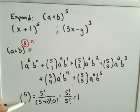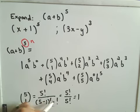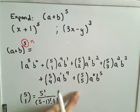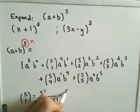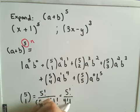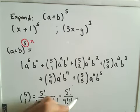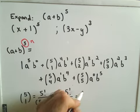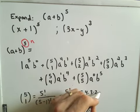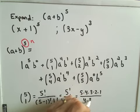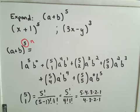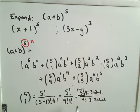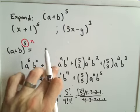For 5 choose 1, I plug in 1 for r: that gives 5 factorial over 4 factorial times 1 factorial. Expanding: 5 × 4 × 3 × 2 × 1 in the numerator; 4 × 3 × 2 × 1 times 1 in the denominator. Everything cancels except the 5, so 5 choose 1 equals 5.